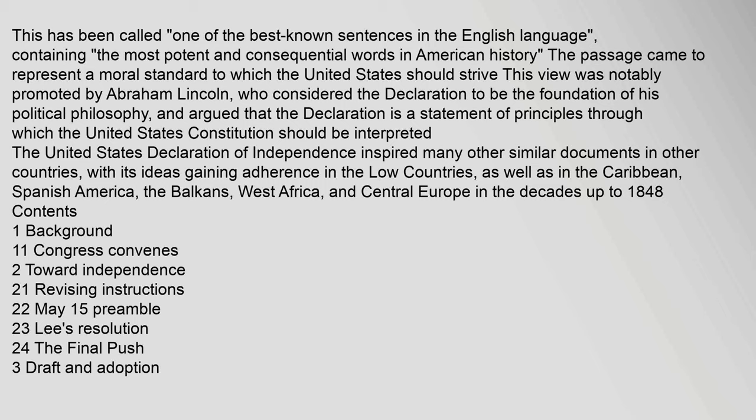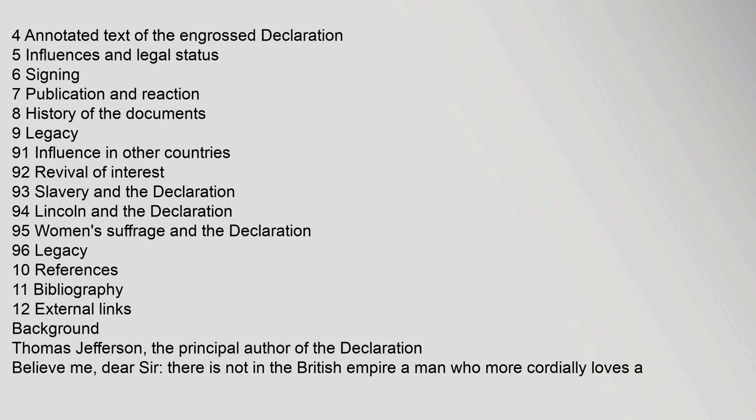The document's major sections include: Background, Congress Convenes, Toward Independence, Lee's Resolution, The Final Push, Draft and Adoption, Annotated Text of the Engrossed Declaration, Influences and Legal Status, Signing, Publication and Reaction, History of the Documents, and Legacy — covering topics such as influence in other countries, revival of interest, slavery and the Declaration, Lincoln and the Declaration, and women's suffrage.